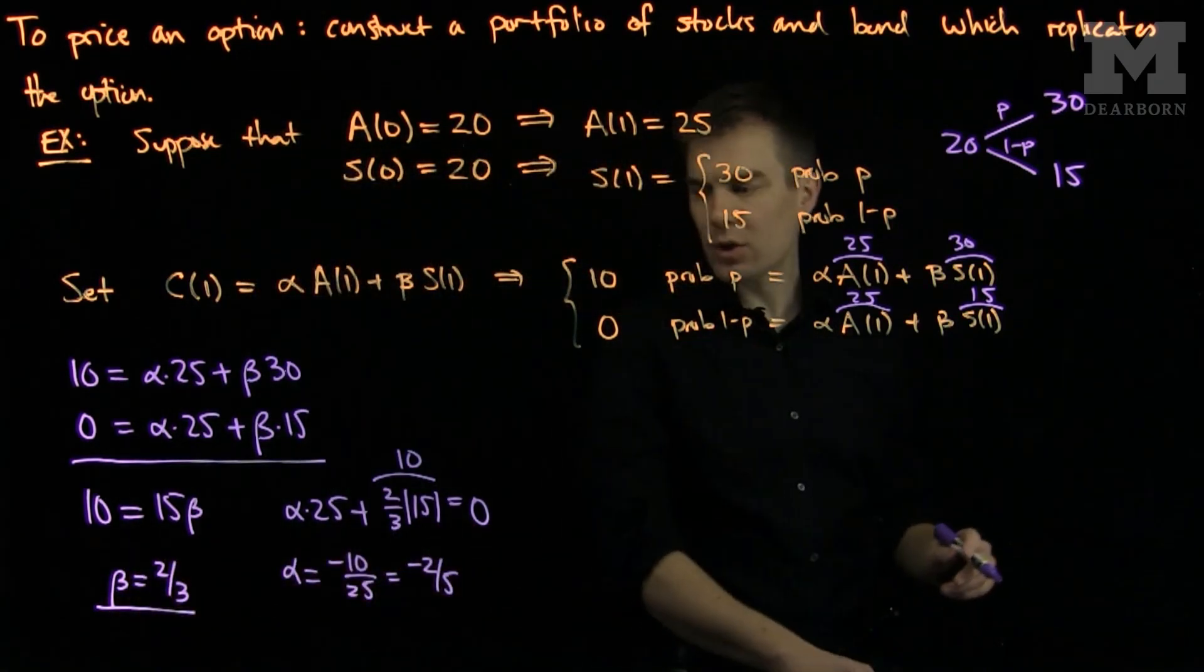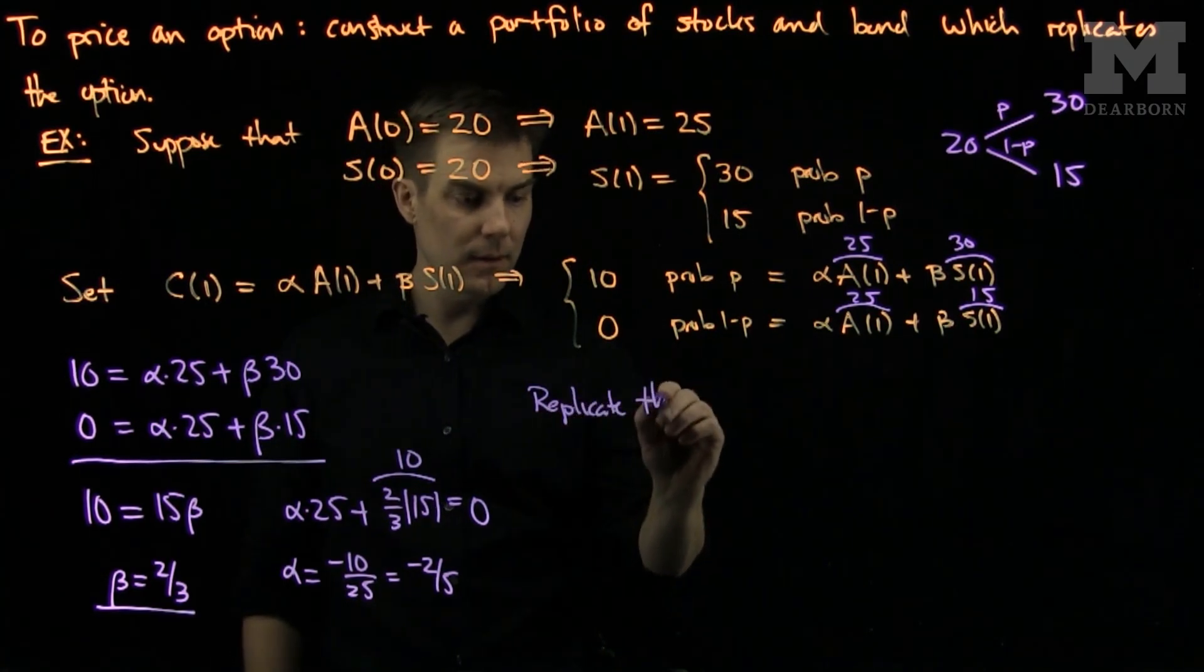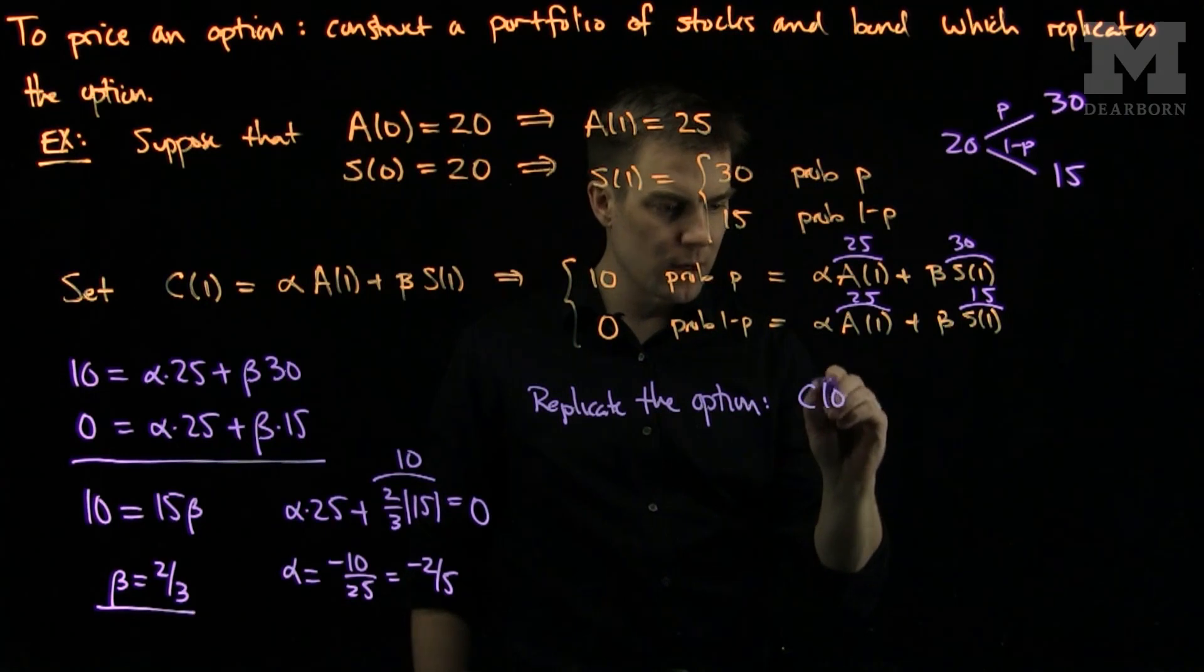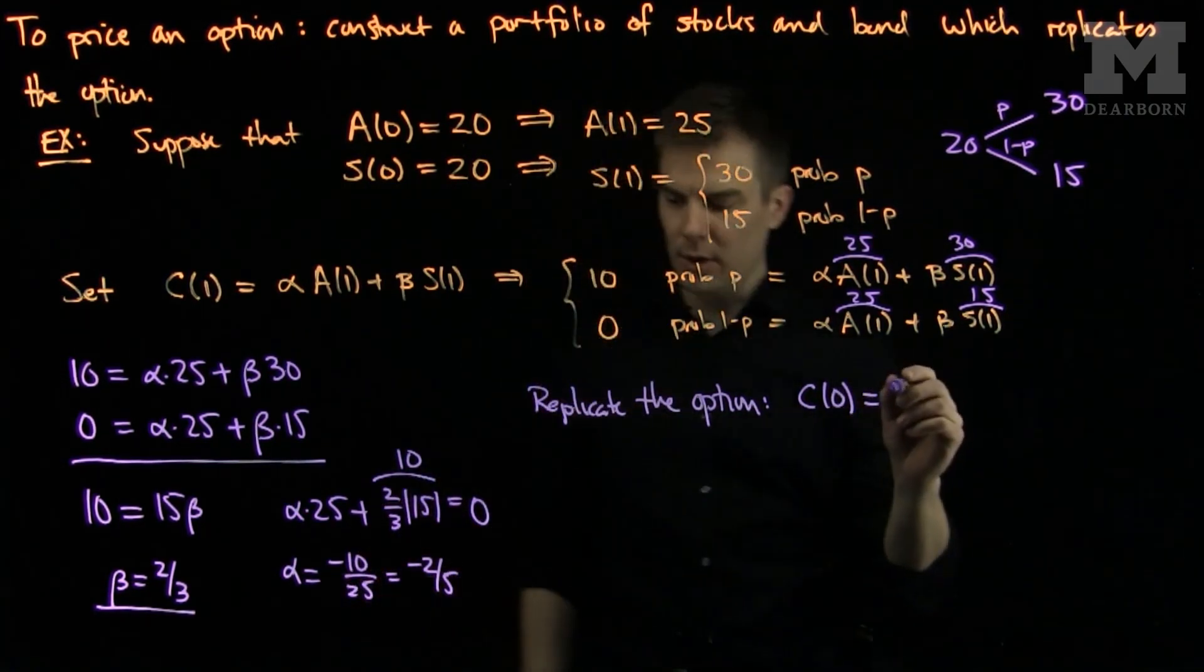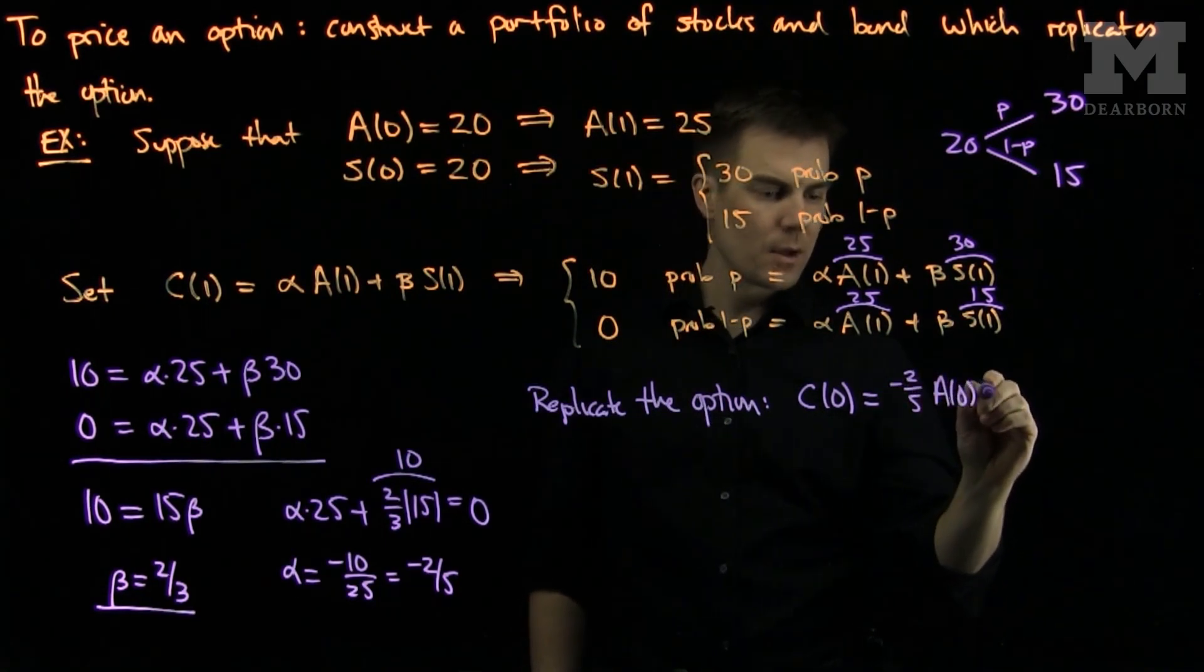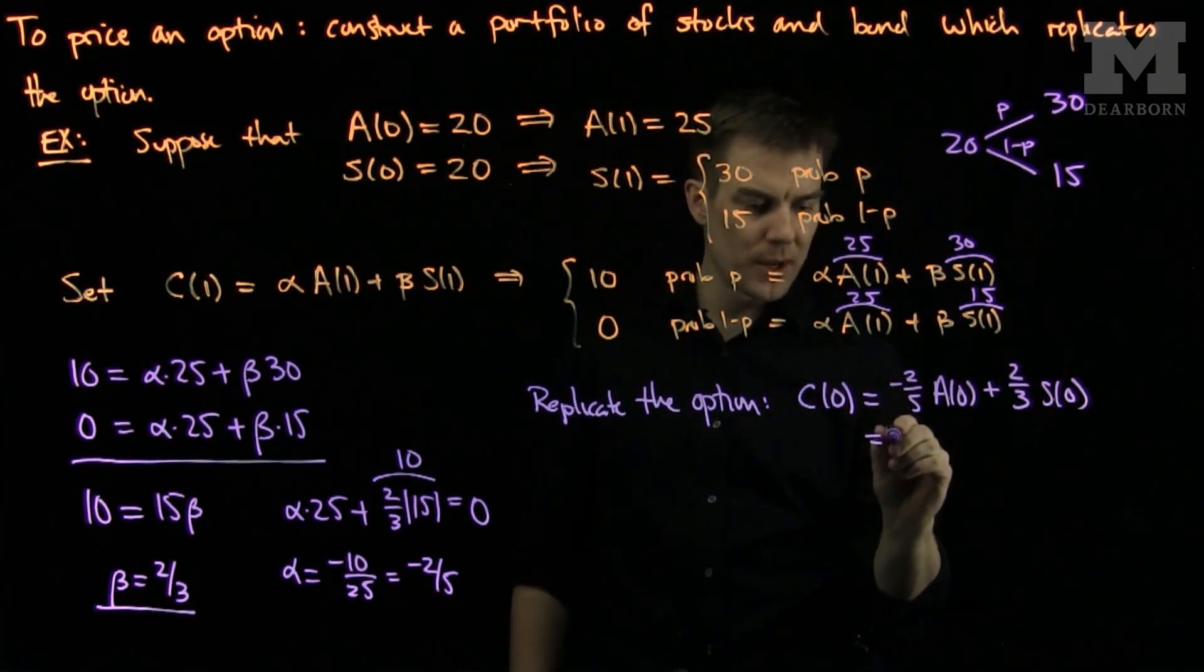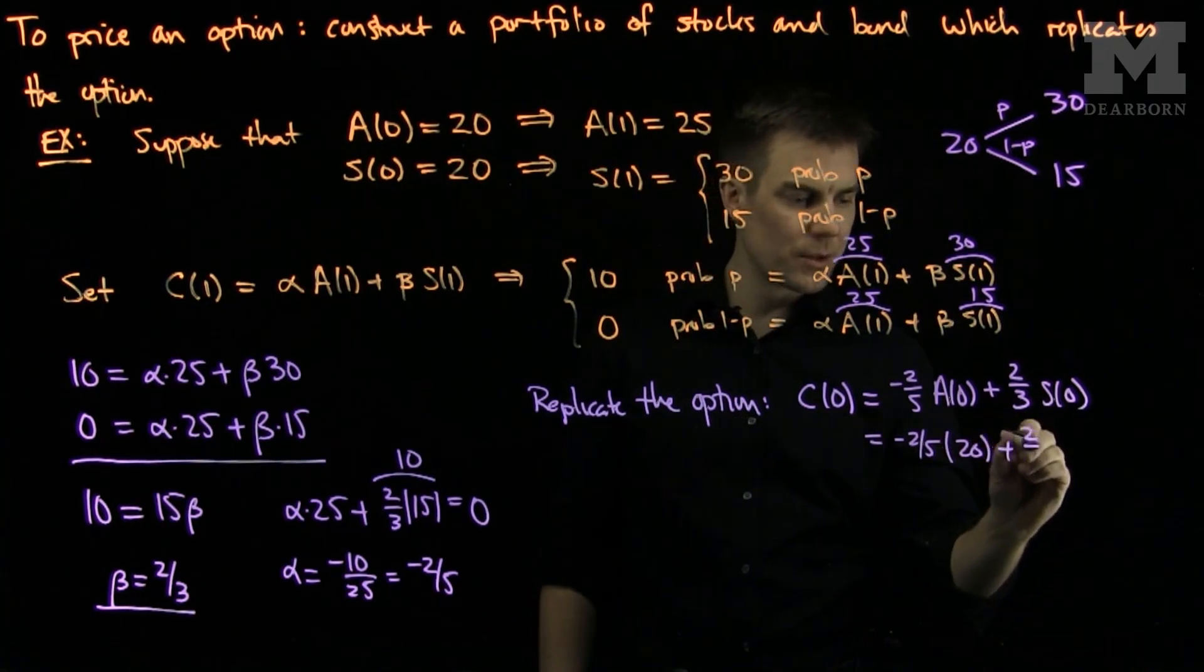What this tells me to do is to replicate the option. What we will need to do is the following. At the initial time of 0, C(0) will be alpha times A(0). So it will be negative 2/5 A(0) plus 2/3 S(0). So we can simplify what this is. This will be negative 2/5. We know that A(0) is 20 plus 2/3 of 20.